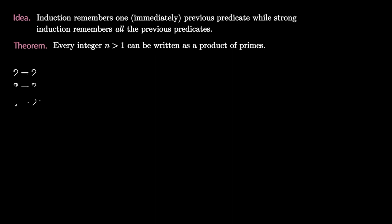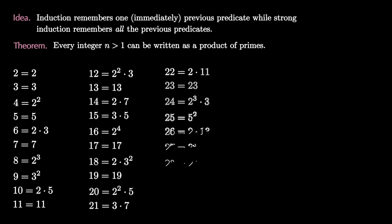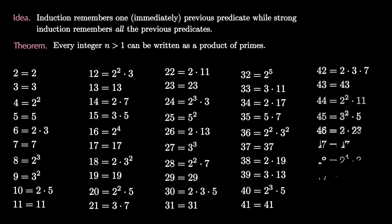Let's see that every integer greater than one can be written as the product of primes. Here we have already written out the numbers with their prime factorizations, but let's pretend that we don't already know them. For example, consider the number 36.